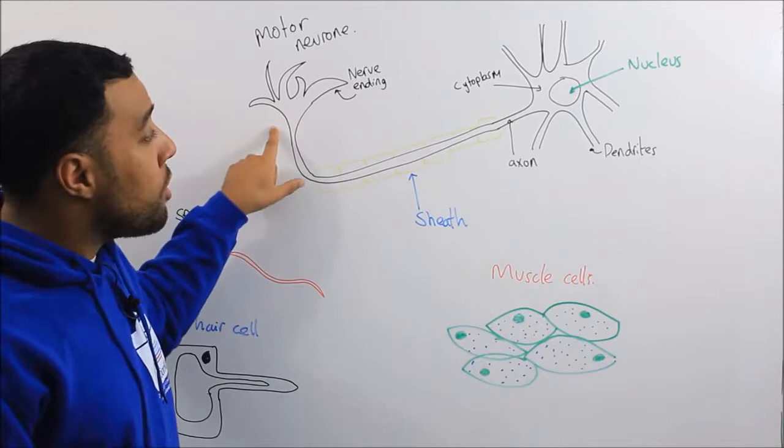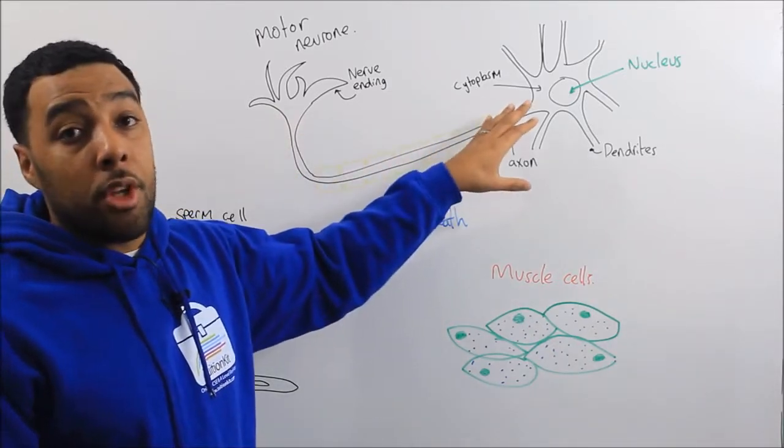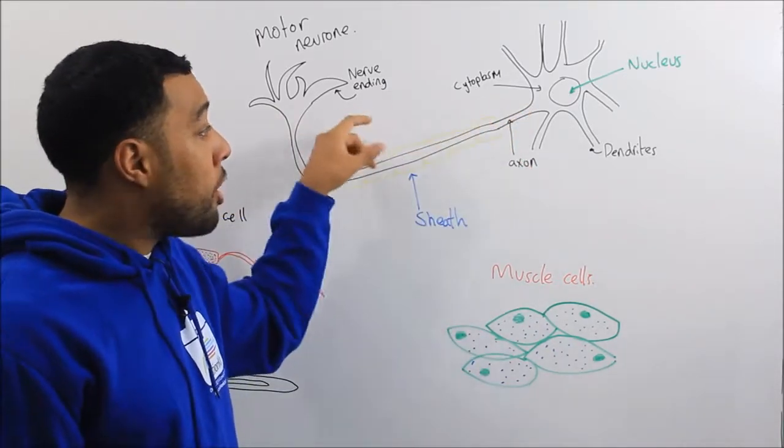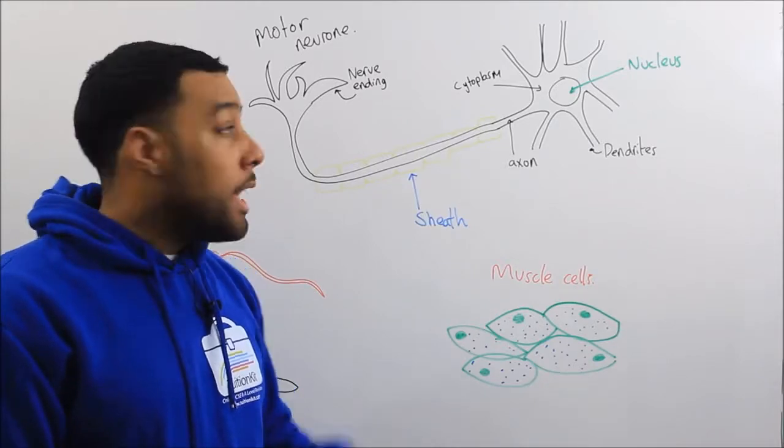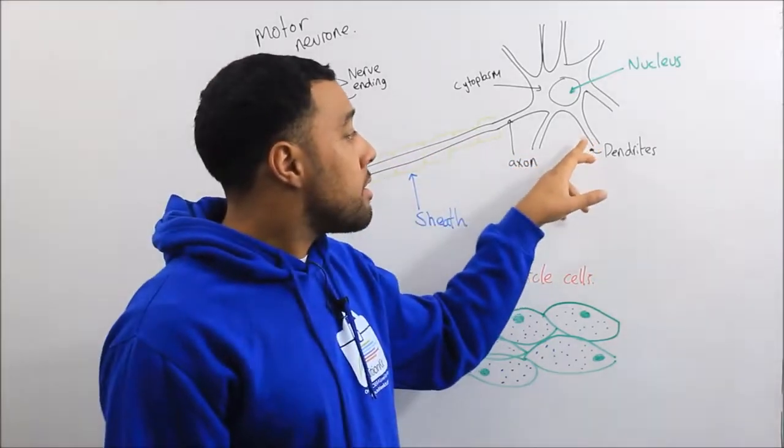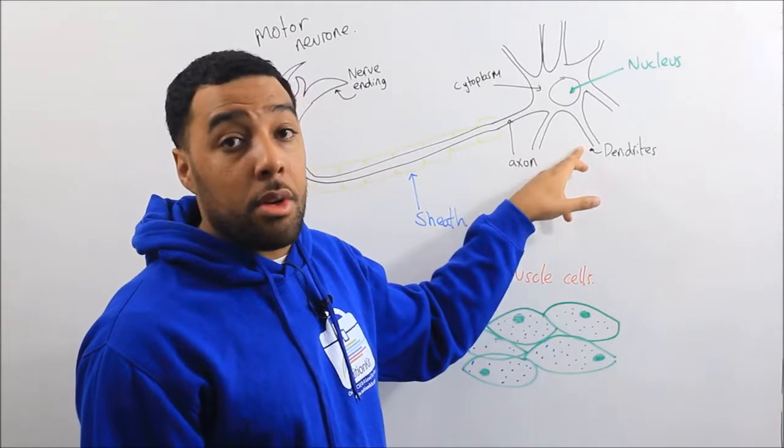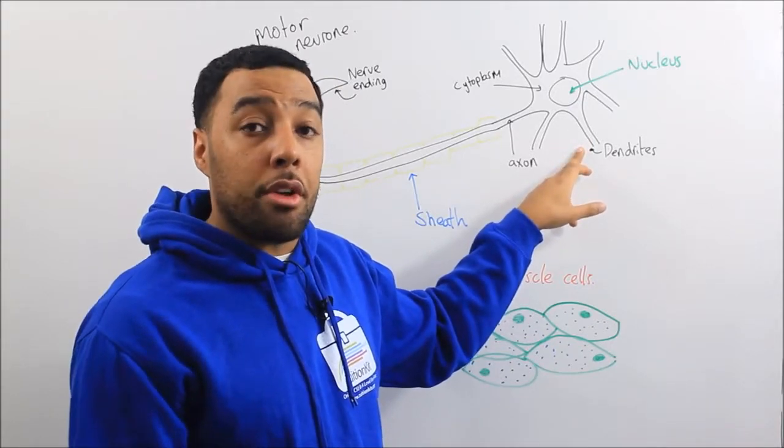The motor neuron is also quite a long cell which means it can stretch to different parts of the body. It also has these dendrites at one end of the cell that allow it to connect to other neurons.